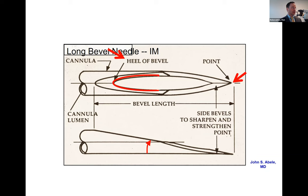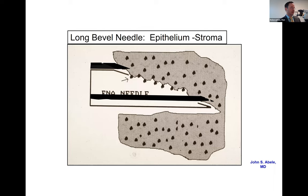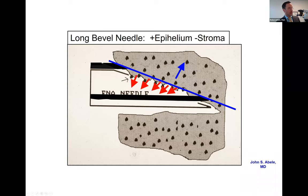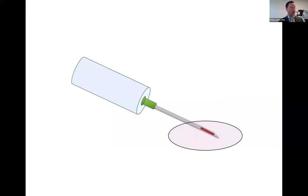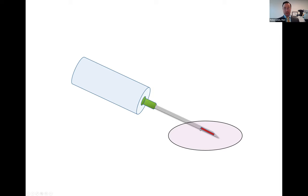When you push the needle forward you cut little tissue fragments using this heel edge, and these go into the needle. What you're really getting is not separate individual cells unless you're aspirating something cystic. If you're doing an FNA biopsy on a solid lesion, you should get these little tiny correlates. I do most of my cases with a 23-gauge needle — that's big enough to get nice little correlates. They collect in the hub of the needle.